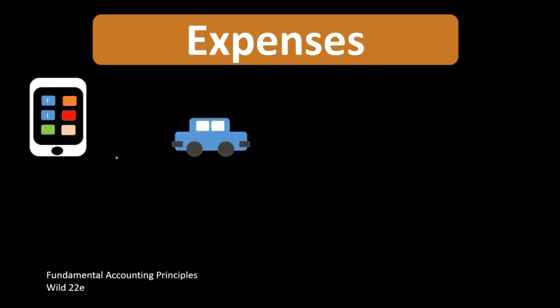If we think about a car, the purchase of the car is a longer-lived thing, so it's going to be an asset. The depreciation as we use it, along with related expenses like gas, are things we consumed at that point in time — those are the expense portion.